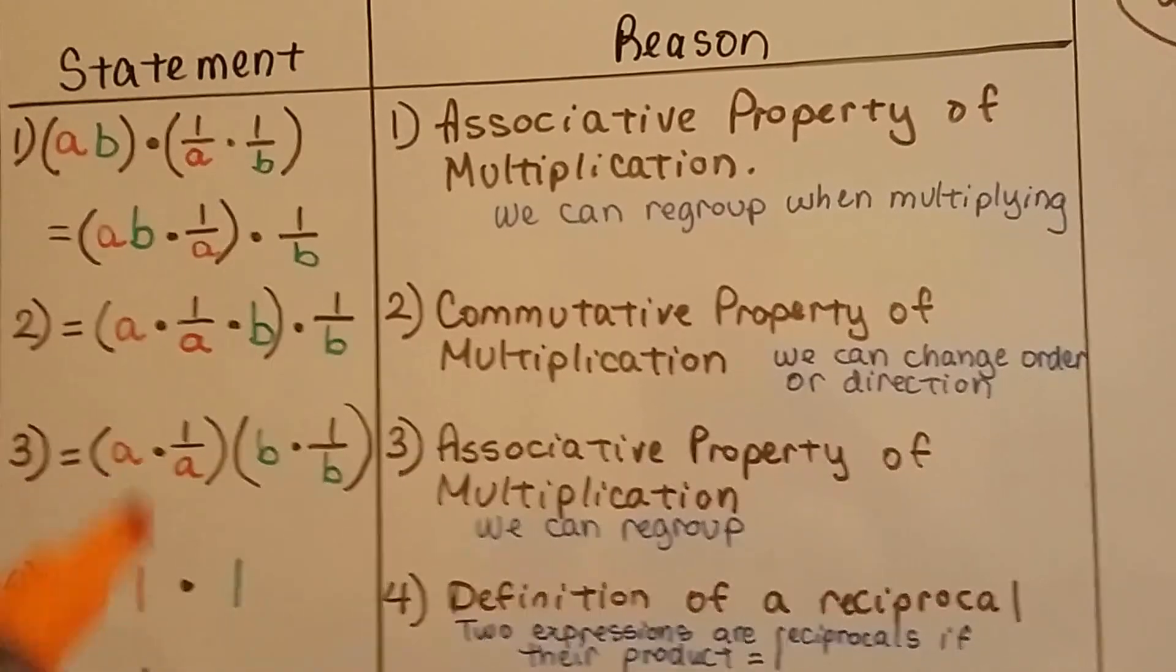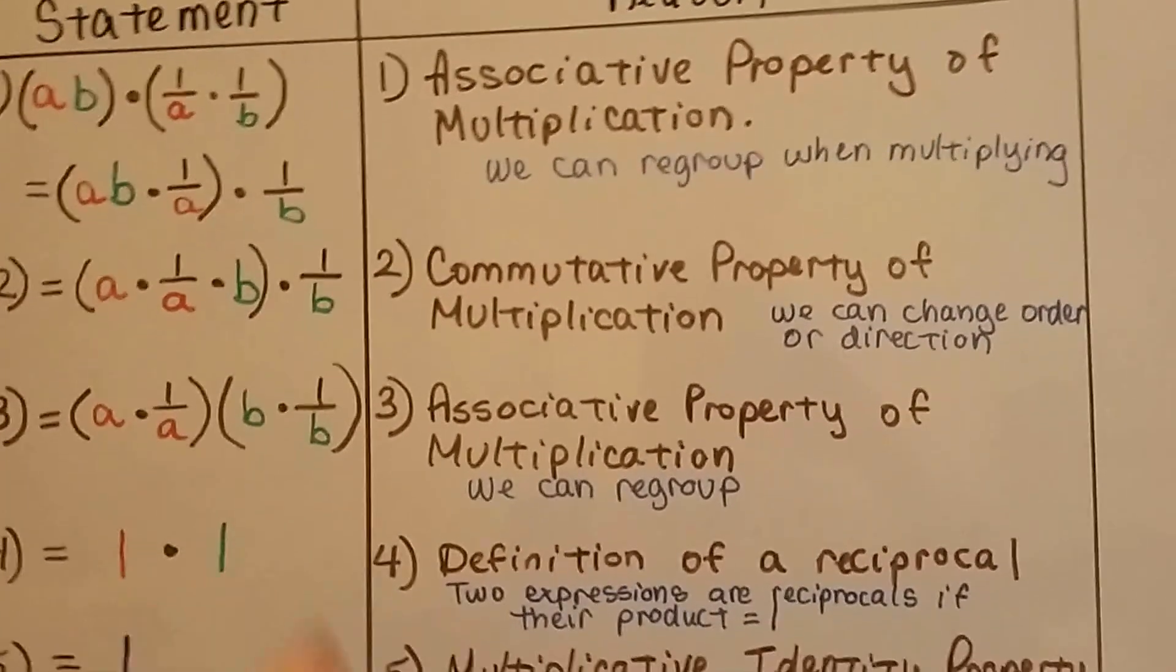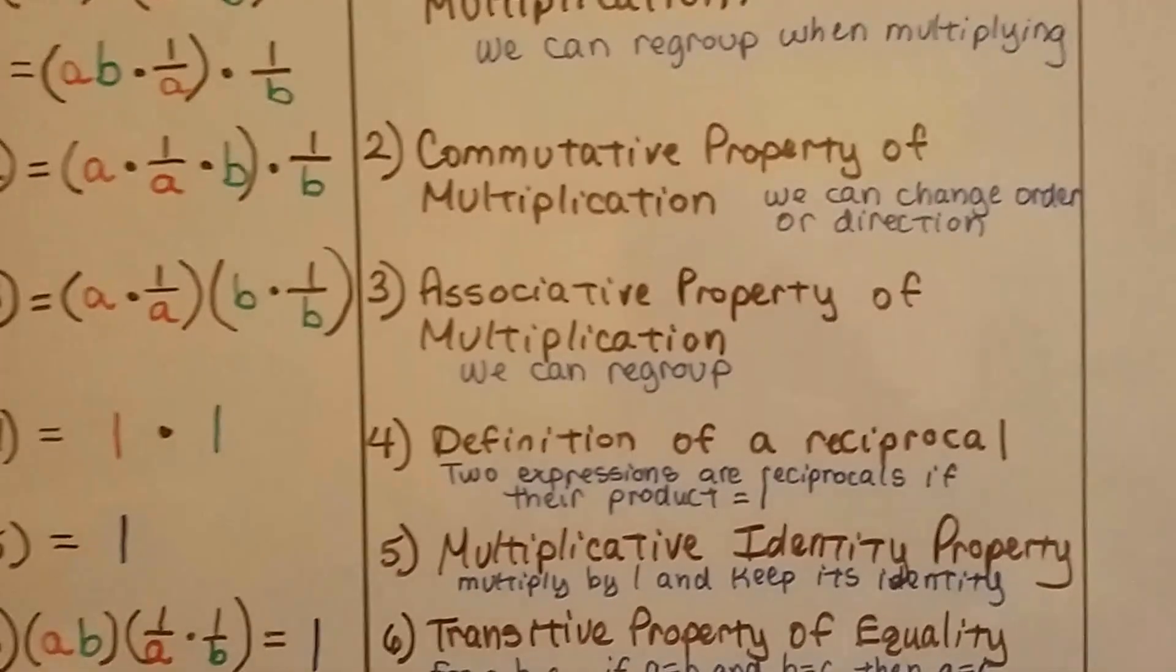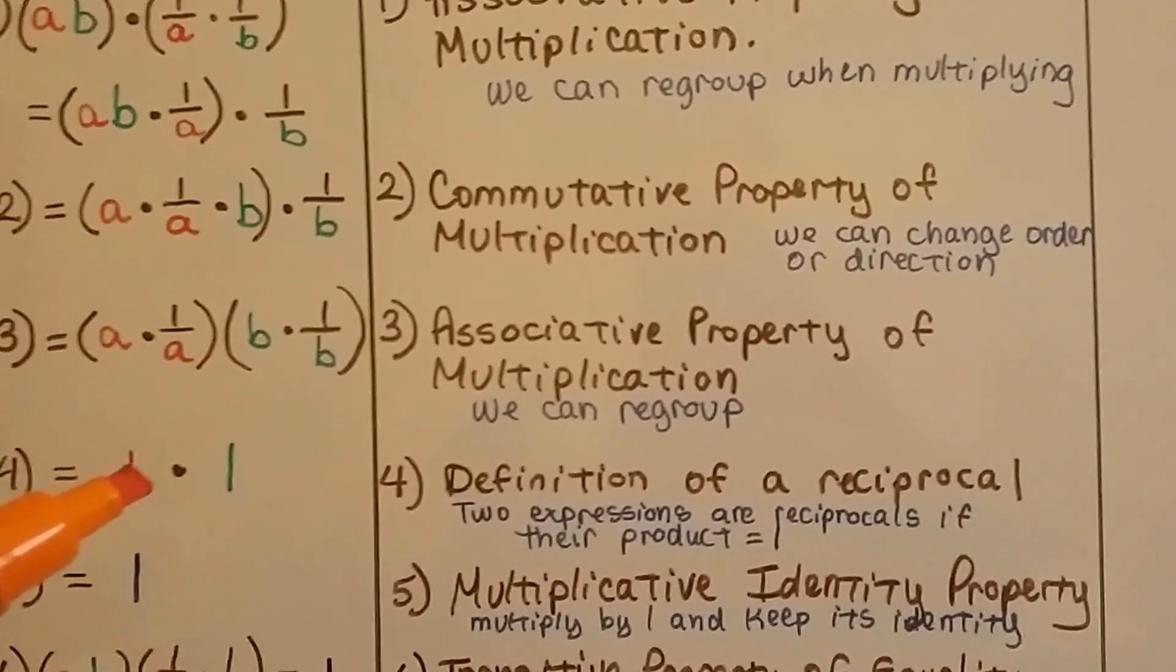We end up with 1, a over a, times 1, b over b. That's a definition of a reciprocal: two expressions are reciprocals if their product equals 1.